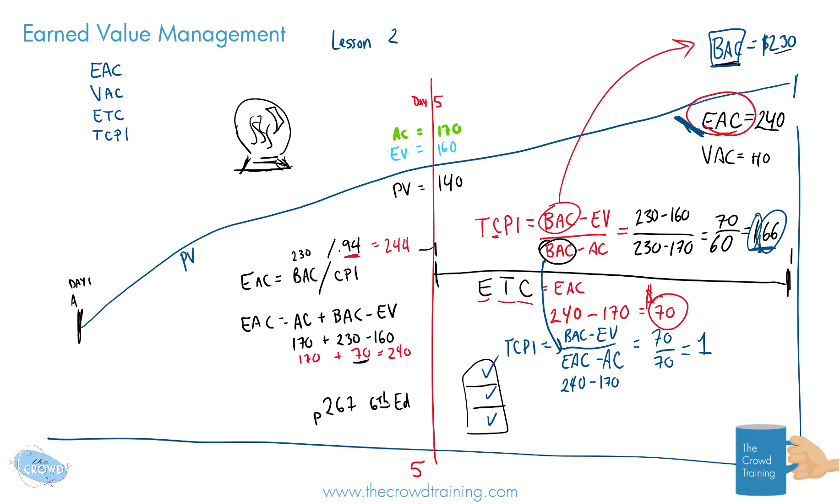So this is where you would use if you have a new milestone or a new target in which to reach and you are then calculating towards that new target. And you can fluctuate that number based on the efficiency needed, based on what's approved and what is desirable by the organization and maybe even the sponsor. But two different ways to look at the to complete performance index, depending if you're using the original budget or a new estimated budget at completion.